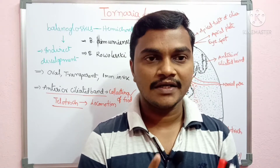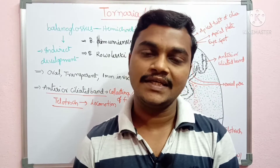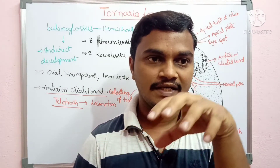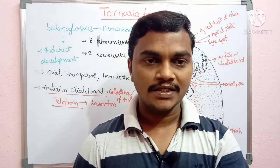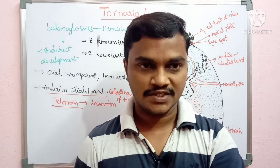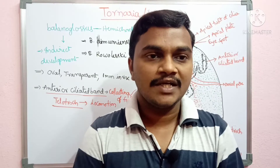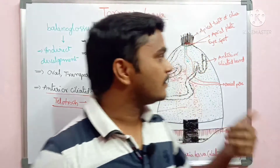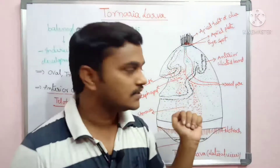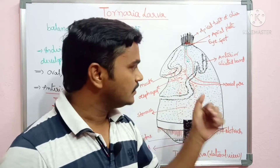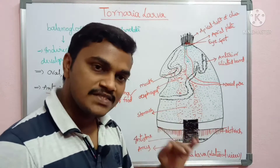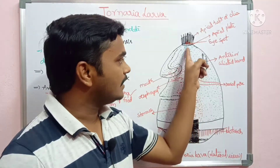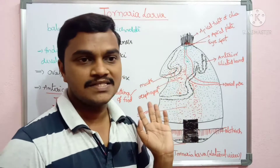Once the free-swimming tornaria larva undergoes metamorphosis, the ciliated larva will go down in the water and automatically fix onto a substrate. After fixing on the substrate, it will metamorphose. Once metamorphosis starts, it loses the anterior ciliated band completely. The posterior ciliated band — the telotroch — remains as it is.